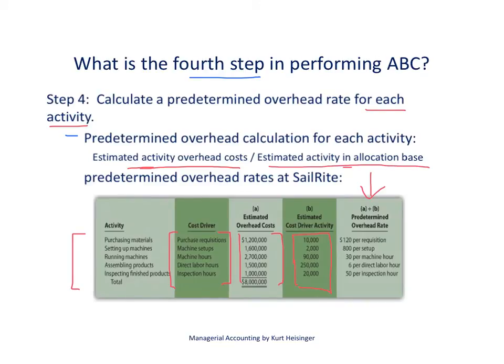Taking purchasing materials as an example: we start with $1.2 million dollars and divide by 10,000 purchase requisitions we expect to issue, giving us a predetermined overhead rate of $120 per requisition. This means that if I'm building a basic sailboat and I issue a purchase requisition, that boat gets charged $120 in overhead related to that requisition.